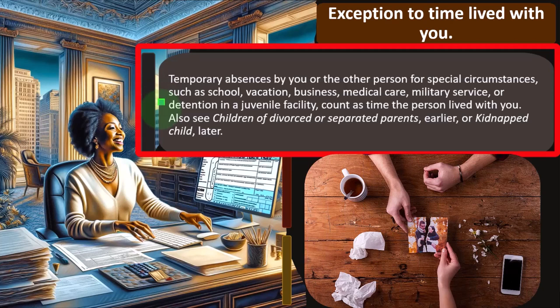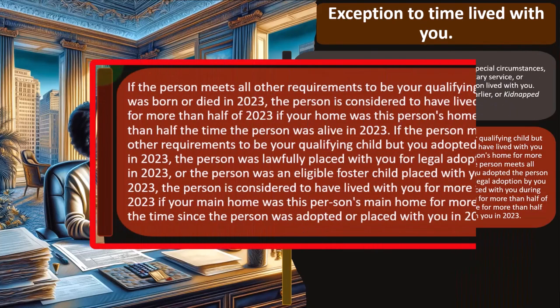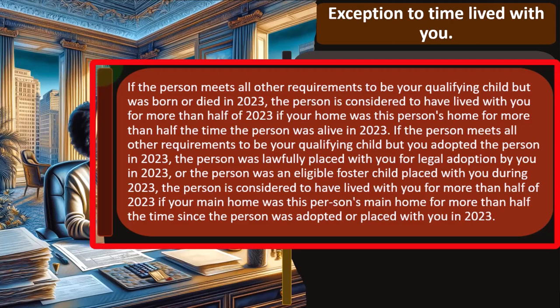If the person meets all other requirements to be your qualifying child but was born or died in 2023, the person is considered to have lived with you for more than half of 2023 if your home was this person's home for more than half the time the person was alive. So if a child died in 2023, you don't need to count the full year — it's based on the portion of the year they were alive, which makes sense.